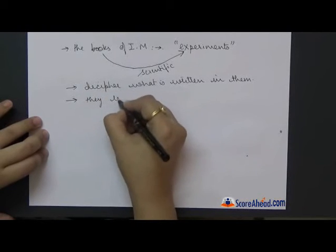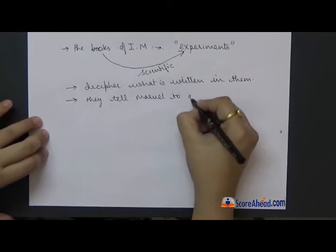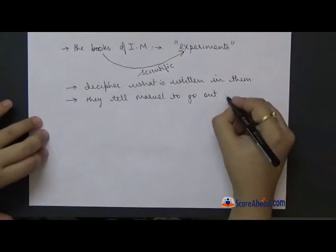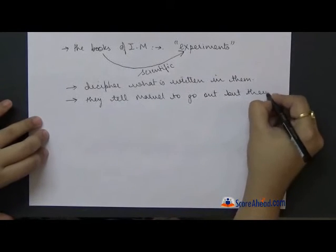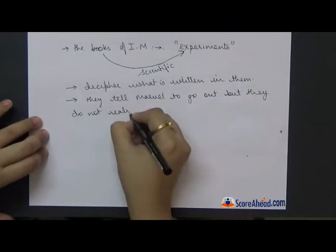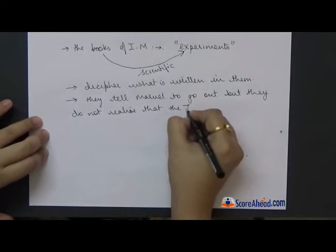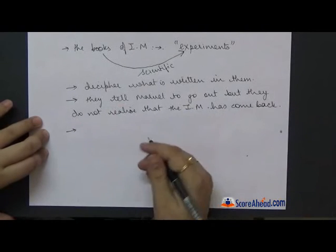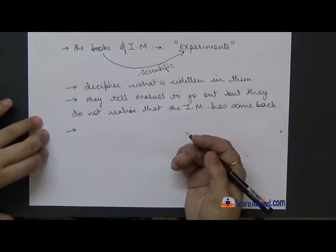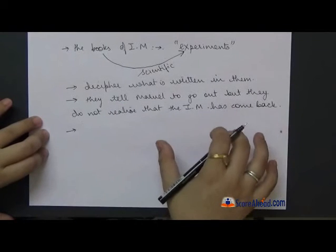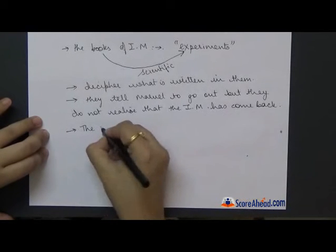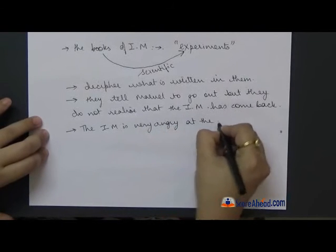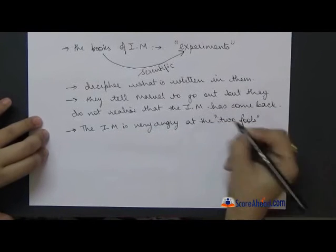If you remember, Kuss is a medical practitioner, he is a doctor, and he thinks he has so much scientific knowledge that maybe he would understand what experiments were going on in the parlor. They are both very deeply interested in these books and they just tell the stranger - who is the stranger? - they tell Marvel to go out. They think this stranger has wrongly entered the room. But they do not realize that the invisible man has come back.